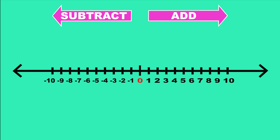That means subtraction on the number line is moving to the left. Let's check with this example: I have $10 but I give away $4 to my friend. That's 10 minus 4, which is 6. On the number line, we start at positive 10 and subtract 4, so we move four places to the left to get 6 as the answer.